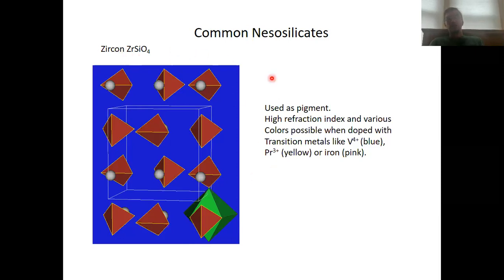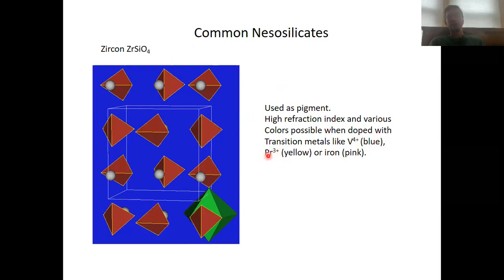Zircon is used as a pigment. It can be used as a white pigment because it has a high refractive index, but it can also be given various colors when doped with transition metals. For instance, doping with vanadium 4+ makes it blue, doping with praseodymium 3+ makes it yellow, and doping with iron 3+ makes it pink.